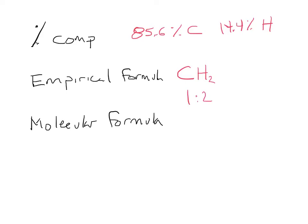For every one carbon you have two hydrogens. In a lab, they can do what's called mass spectroscopy, and they can use that to figure out the mass, and from that they can figure out the actual formula. So what they would find is maybe this ends up being C4H8 as its molecular formula. That molecular formula actually matches this ratio — it's a one-to-two ratio, four and eight — and it also matches the percent composition.